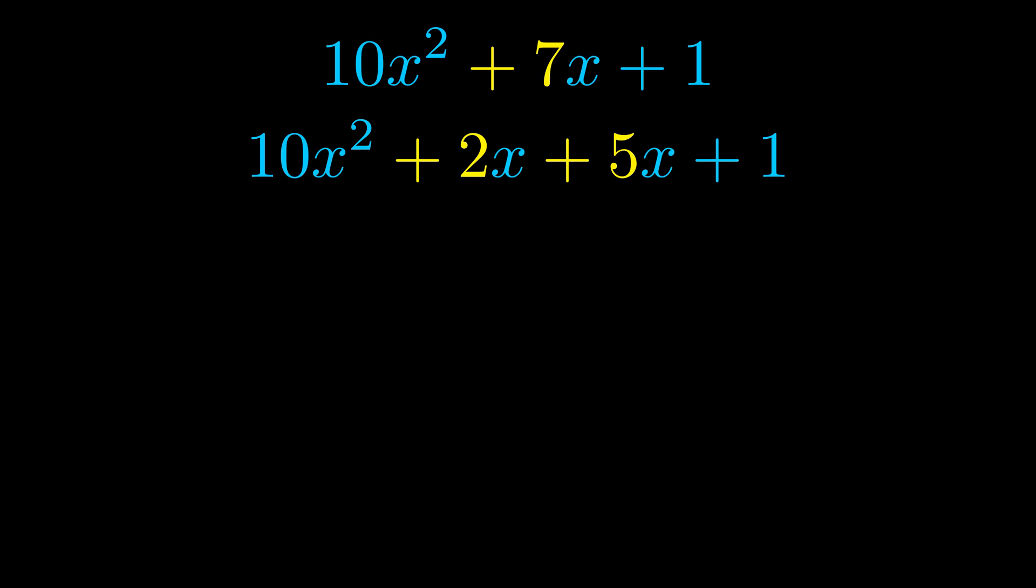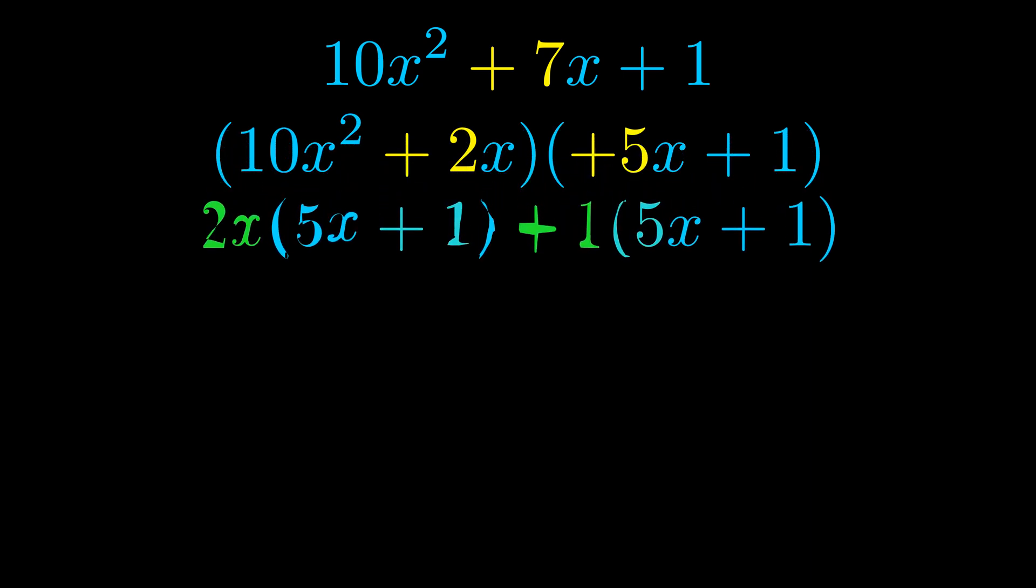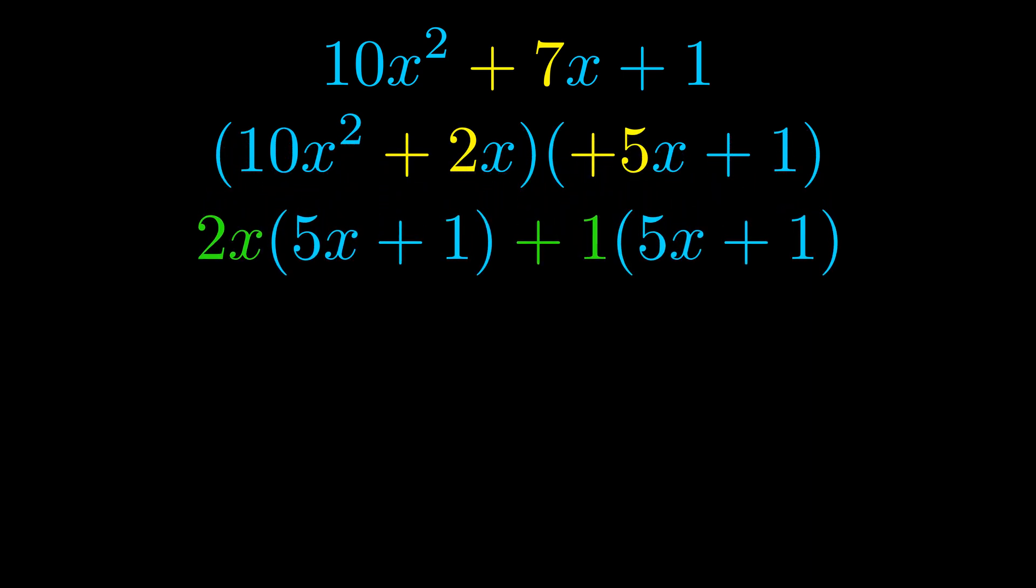Once we've done this, we put parentheses around the first term and the last term so that we can take the greatest common factor out of both terms. We can see the greatest common factor is now outside in green.